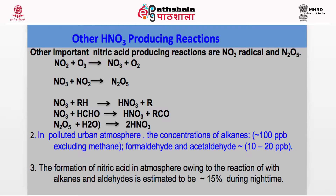There are other reactions which produce HNO3. Oxidation of NO2 by O3 gives the nitrate radical NO3, which is very important — it controls nighttime chemistry, while daytime chemistry is controlled by the OH radical. NO3 combines with NO2 to form N2O5, which dissolves in water to form HNO3. NO3 radicals also react with hydrocarbons, abstracting a hydrogen atom to form HNO3. In polluted atmosphere, the concentration of alkanes (excluding methane), formaldehyde, and acetaldehydes are significant. Formation of nitric acid due to reaction with alkanes and aldehydes is estimated at 15% during nighttime.